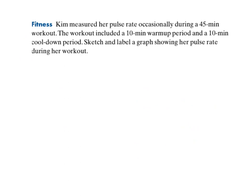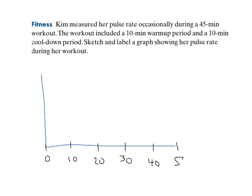Now what we also need practice with is how we make graphs. So if Kim measures her pulse rate occasionally during a 45-minute workout, I'm going to look at having a graph where I might have 0, 10, 20, 30, 40, 50 along the x-axis — so this is going to be my time in minutes. And then the pulse rate is going to be over here on the y-axis. Now I'm not given any pulse rates, but I need to come up with a graph.